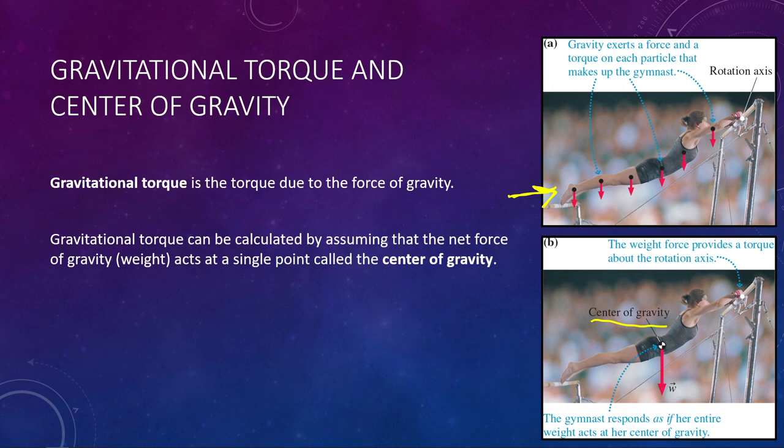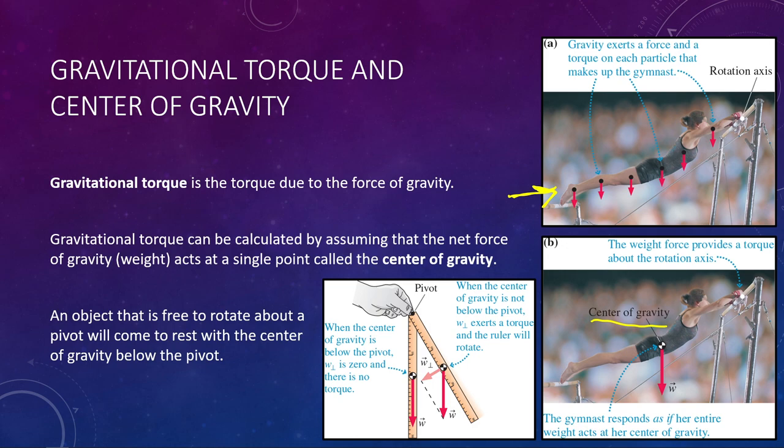When an object is free to rotate — attached only at its pivot point so it can swing freely — it will swing like a pendulum and come to rest with the center of gravity directly below the pivot point. I demonstrate this in class with a meter stick held at its tip, and it always comes to rest straight up and down with the center of gravity below the pivot. You can even do this with your own arm: let it go limp and it swings down, hanging vertically with the arm's center of gravity below your shoulder.